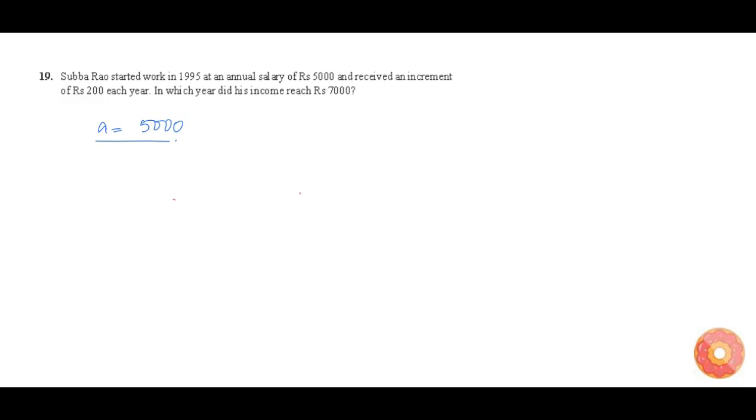We take A as 5000. He receives an increment of 200 rupees each year, which means the successive difference between salaries he is receiving in any year is 200. Therefore, this sequence is an arithmetic progression and the common difference is 200.